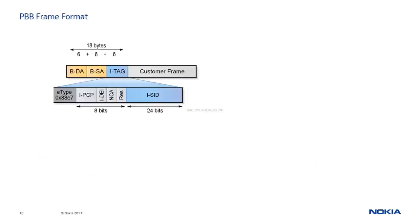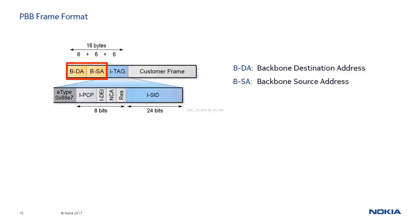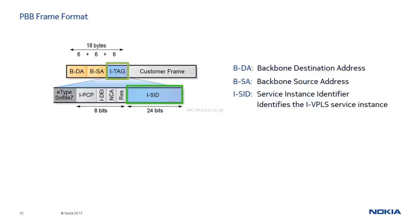Each PBB node is assigned one or more BMACs. On the Nokia 7750 SR, the BMAC can be configured and by default it is set to the chassis MAC. When a customer frame arrives at the BVPLS, the BMAC source and BMAC destination addresses are added to identify the source and destination PEs. An I-TAG field that contains the ISID is also added to identify the customer VPN to which the frame is addressed. The ISID value is used at the destination PE as the demultiplexer field, similar to a VC label in a pseudowire.